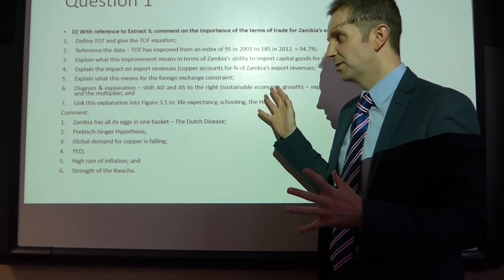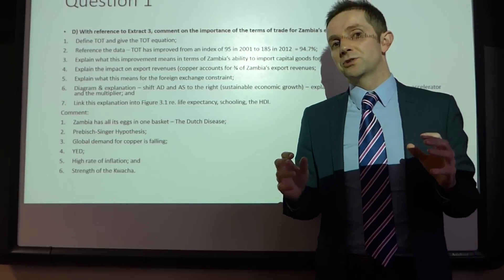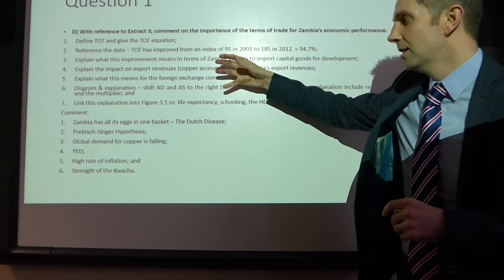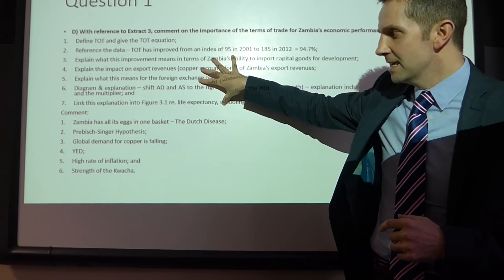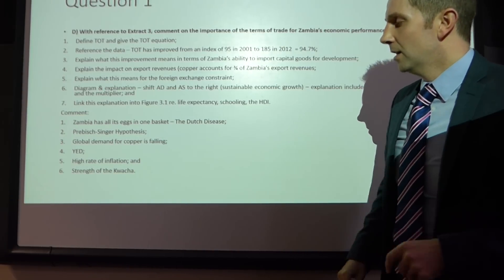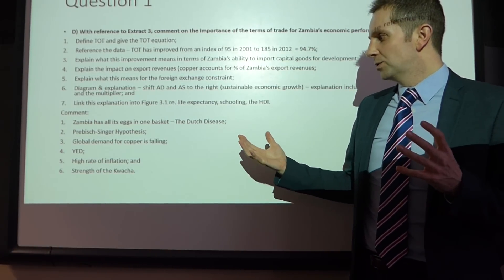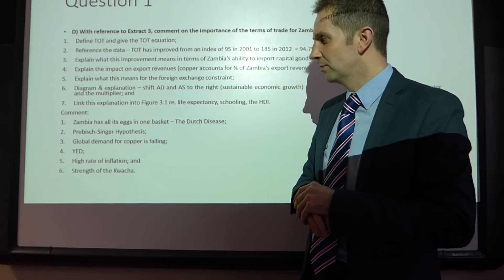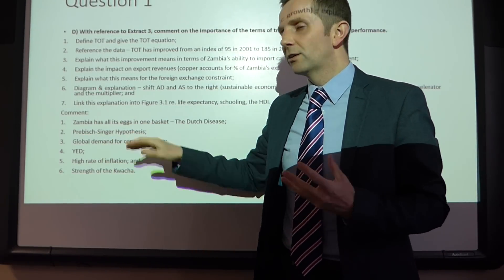Now into the comments — remember the comment question requires a two-sided discussion. We've analysed what ought to happen; now here are reasons why it might not. You could talk about the fact that Zambia has all its eggs in one basket, which we refer to as the Dutch disease — do a little research on that. You could also talk about the Prebisch-Singer hypothesis, found in your OCR textbook alongside Harrod-Domar, Thirlwall's Law, etc. Prebisch-Singer states that developing nations like Zambia, predominantly specialising in primary commodities, will see their terms of trade tend to deteriorate over time.